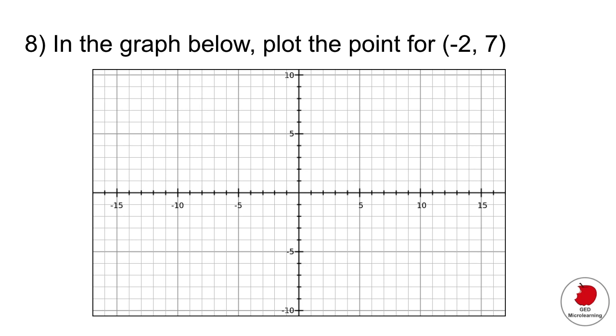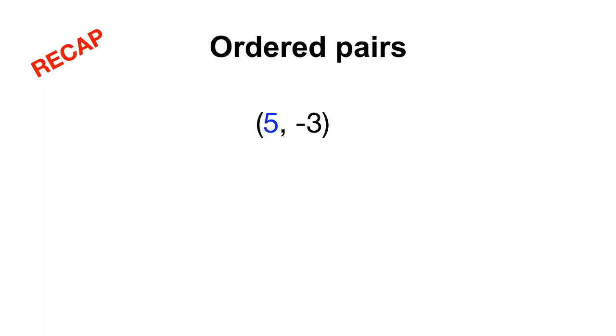In the GED, sometimes they also ask you to physically interact with an image. That could be a graph, that could be a line plot. In this case, they're giving us a graph and asking us to plot a point. Notice there again, we have those ordered pairs. Once again, remember that the x value is the first value. The y value is the second one. We would start at our zero for the x value there in blue. Because it's minus 2, we're going to move two spots to the left.